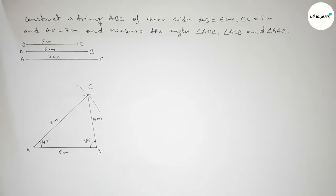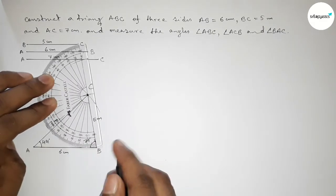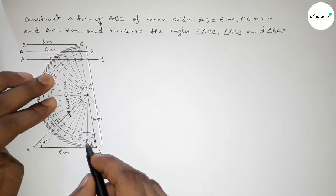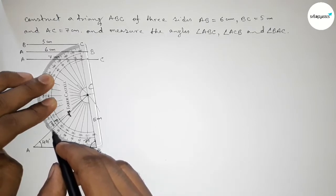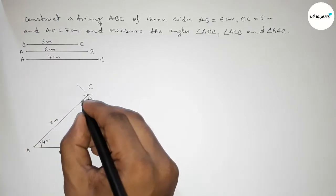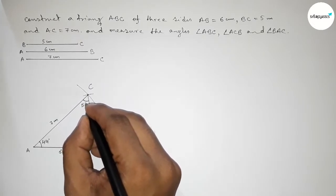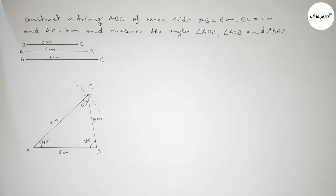Now measure angle C by using protractor. This is 55 and 56, 57. So angle C equal to 57 degrees approximately.